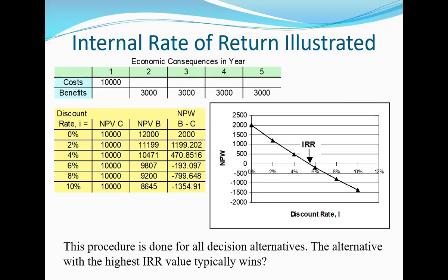To be able to do that, we need to assume a series of discount rates and estimate the net present worth of this alternative. I can do the 0% case — that's pretty easy. At a 0% discount rate, all these future values of money are worth the same as today's dollars, because you can't earn any interest. So the net present cost will be $10,000 and the benefits will be $12,000, because the interest rate is 0%.